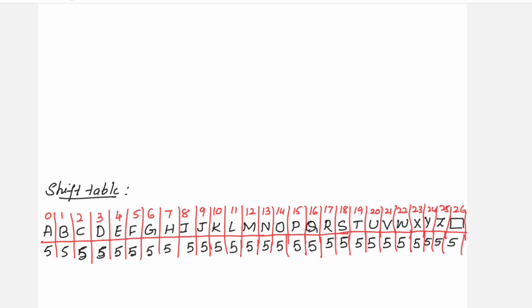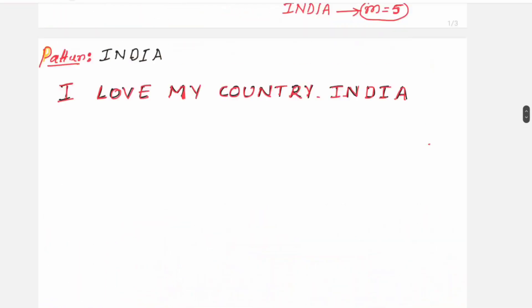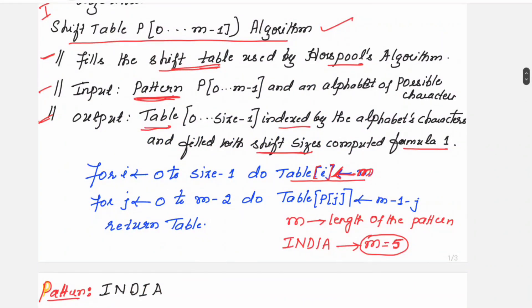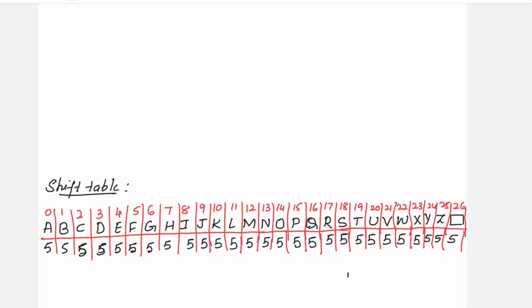Now, how will these values get updated? That is the next step. The second for loop says: for J equal to 0 to M minus 2, do table[P[j]] = M minus 1 minus J. This means wherever the letters of the pattern — I, N, D, I, A — appear in the shift table, you update them with new values instead of retaining 5.